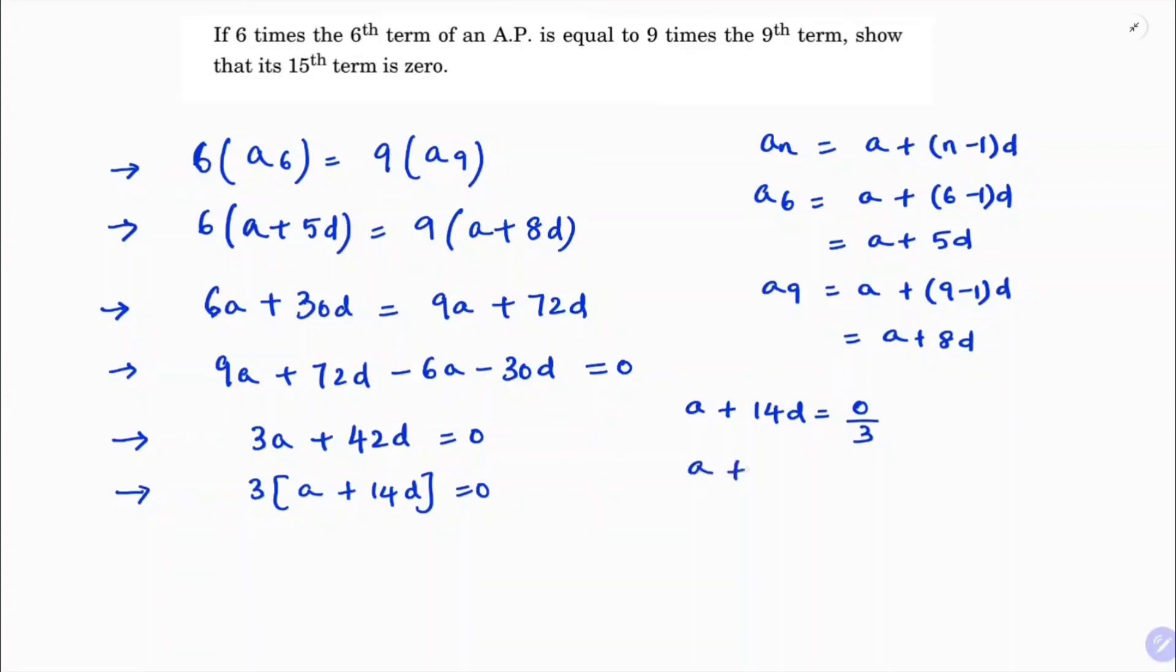A plus 14D is nothing but the 15th term. So the 15th term is 0, because T15, if you will calculate, T15 is A plus 15 minus 1 times D, which is nothing but A plus 14D.